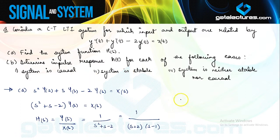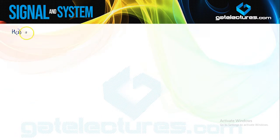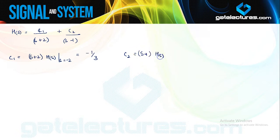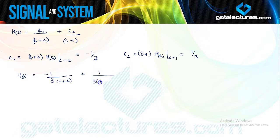To calculate the impulse response h(t) I express H(s) as a partial fraction expansion: H(s) = C1/(s+2) + C2/(s-1). C1 = (s+2)*H(s) at s = -2 = 1/(s-1) at s = -2 = -1/3. C2 = (s-1)*H(s) at s = 1 = 1/(s+2) at s = 1 = 1/3. So H(s) = (-1/3)/(s+2) + (1/3)/(s-1).